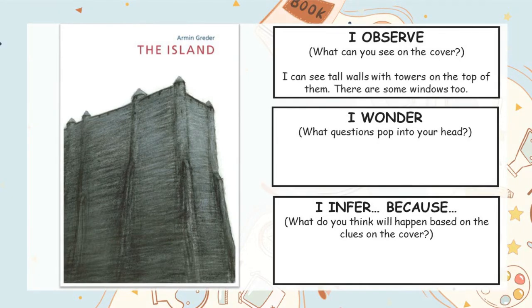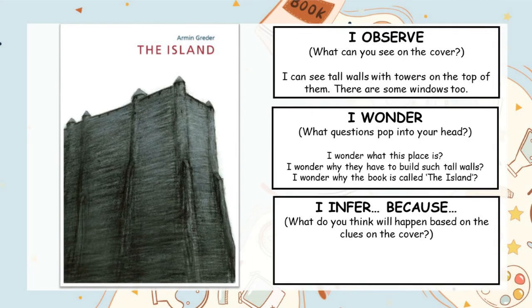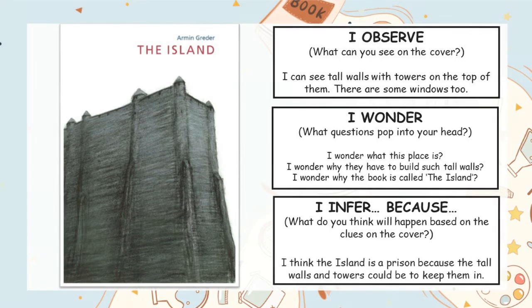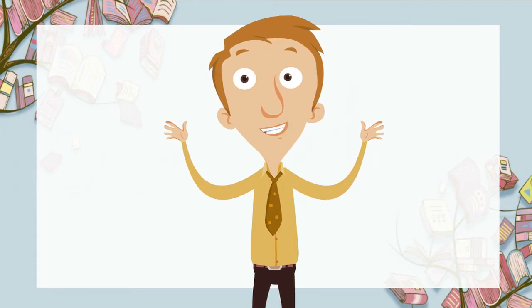How did you get on with that? The observe was actually quite difficult this time because there's not much to observe on this book. I said that I can see some tall walls with towers on the top of them, and that there are some windows there too. But other than that, we can't really see much at all on this cover. My wonder questions though, there were plenty of them. Here's three that I thought of: I wonder what this place is. I wonder why they have to build such tall walls. And I wonder why the book is called The Island. And finally, for the I infer, I inferred that I think the island is a prison because the tall walls and towers could be used to keep the prisoners in. What did you think? Did you infer something different?